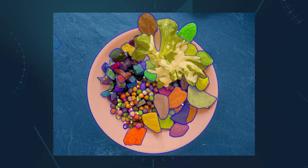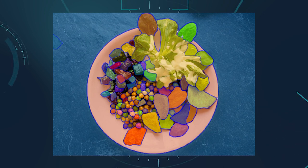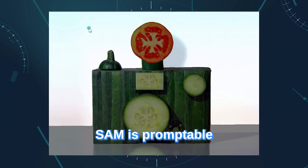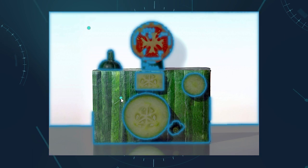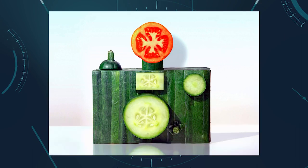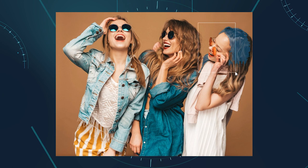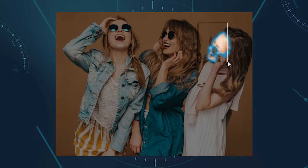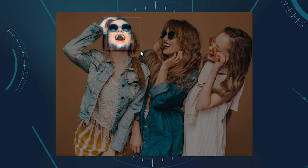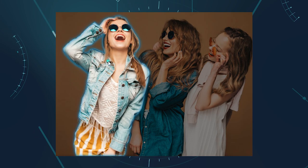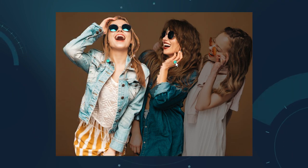SAM is different from other segmentation models in several ways. SAM is promptable, which means it can take various input prompts, such as points or boxes, to specify what object to segment. For example, you can draw a box around a person's face and the Segment Anything Model will generate a mask for the face. You can also give multiple prompts to segment multiple objects at once.